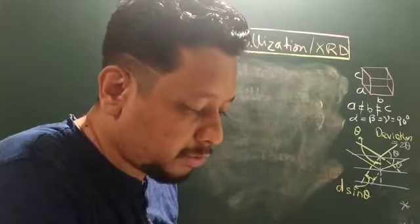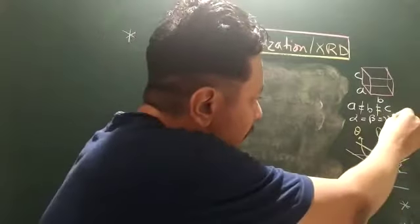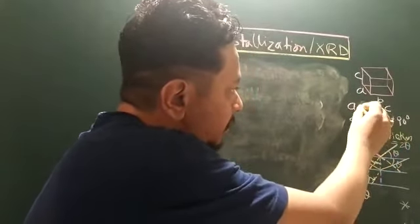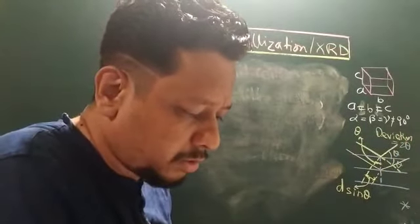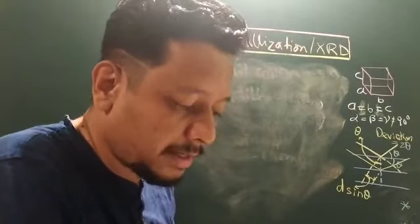A equals B equals C, alpha equals beta equals gamma not equal to 90. This kind of crystal known as rhombohedral crystal. Example: calcite.